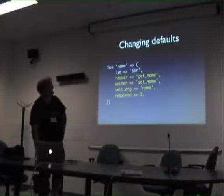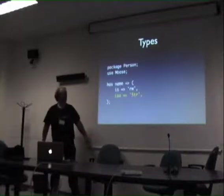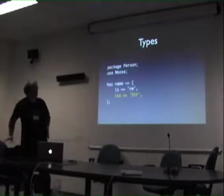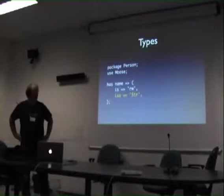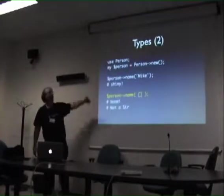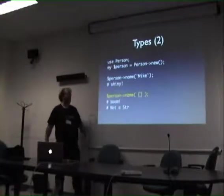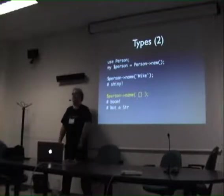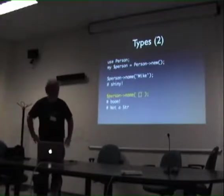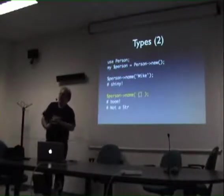`has` supports types. It says this is of type `Str`. Moose provides a bunch of internal types, and on top of that you can define your own. Essentially, `my $person = Person->new(name => 'Mike')` works because it's a string. But `$person->name([])` - passing an empty array ref - doesn't work because it's not a string; it throws an error. You can do quite complex things with that - define types that say it has to be a positive integer, or a string in capitals, or whatever you like. There's a whole bunch of types which make writing code that stops you blowing yourself up quite handy.